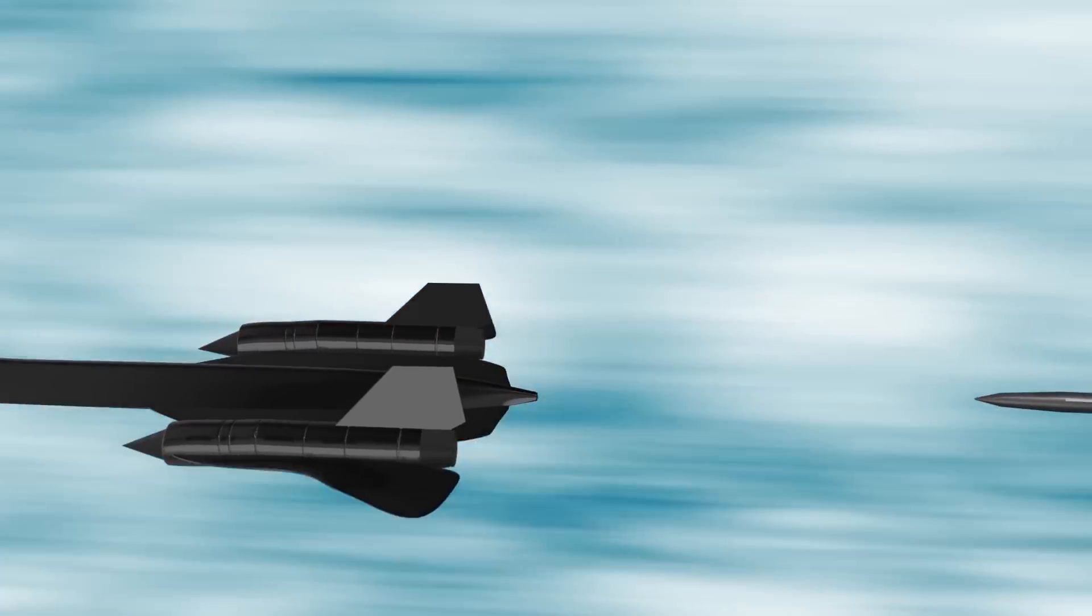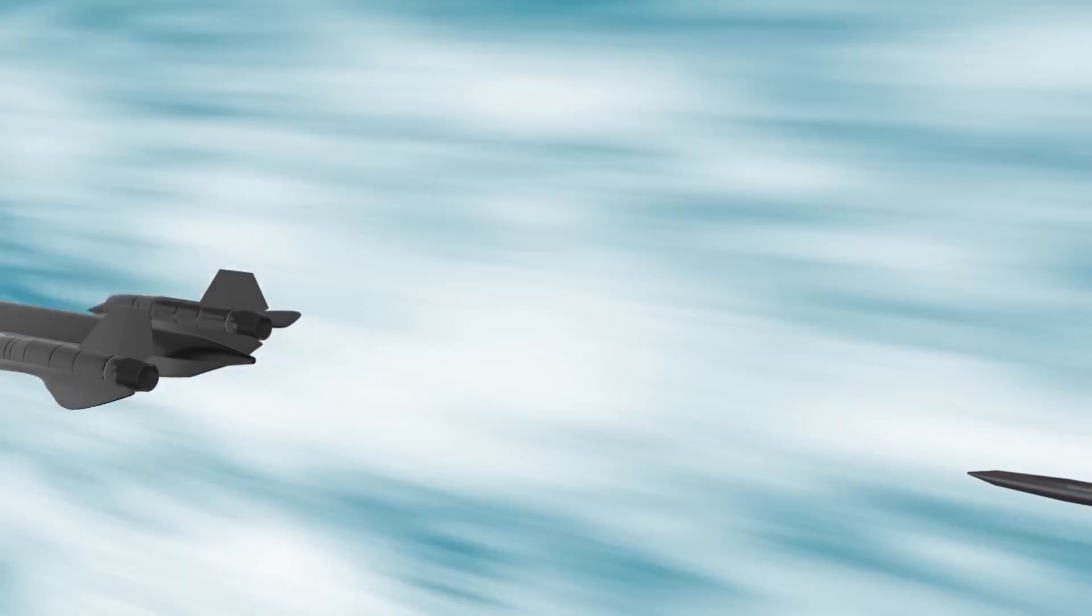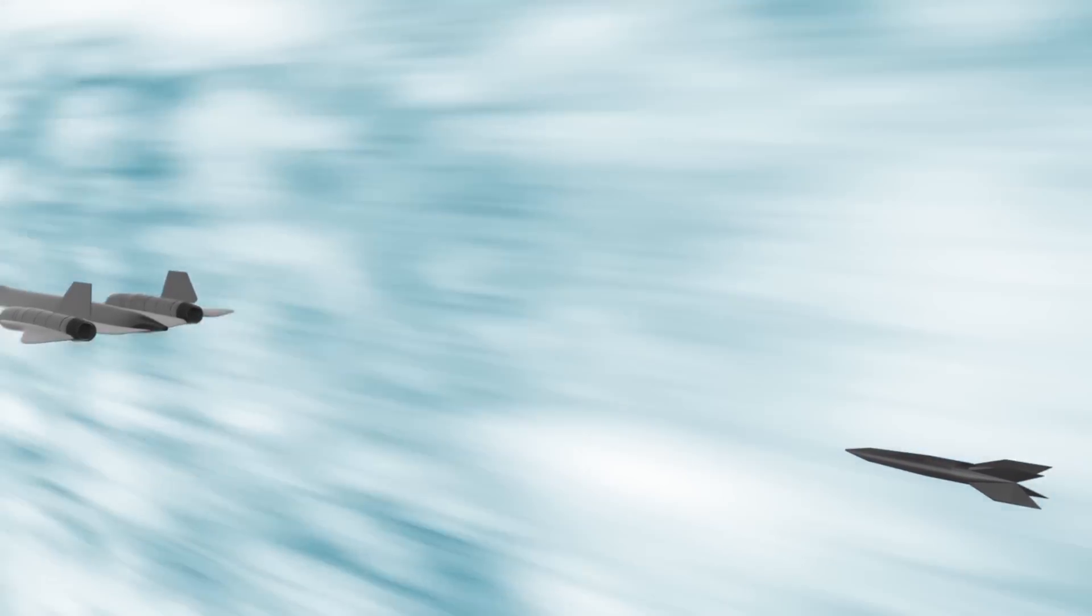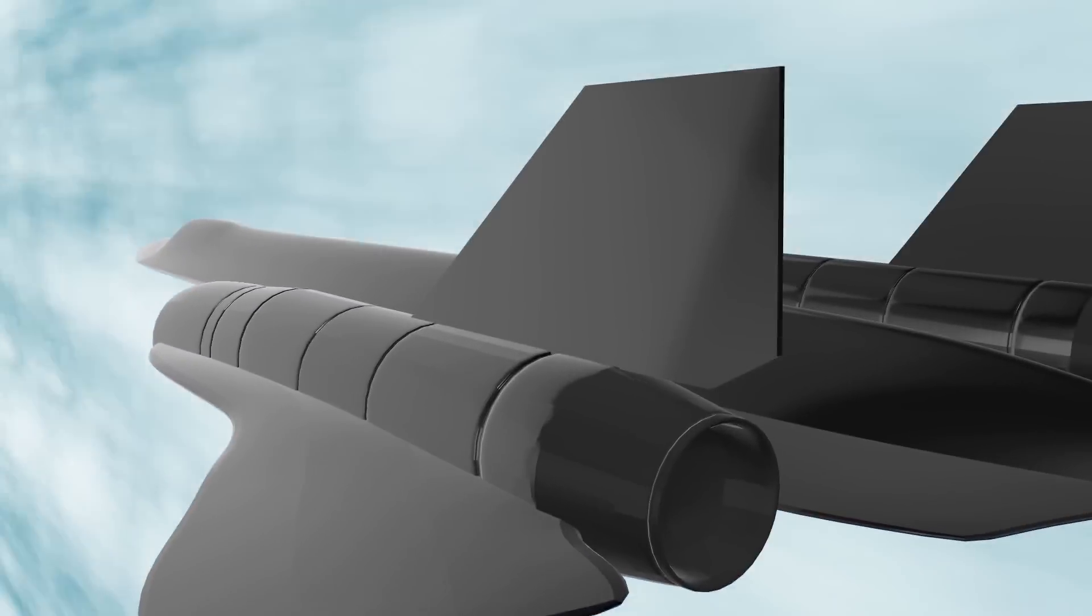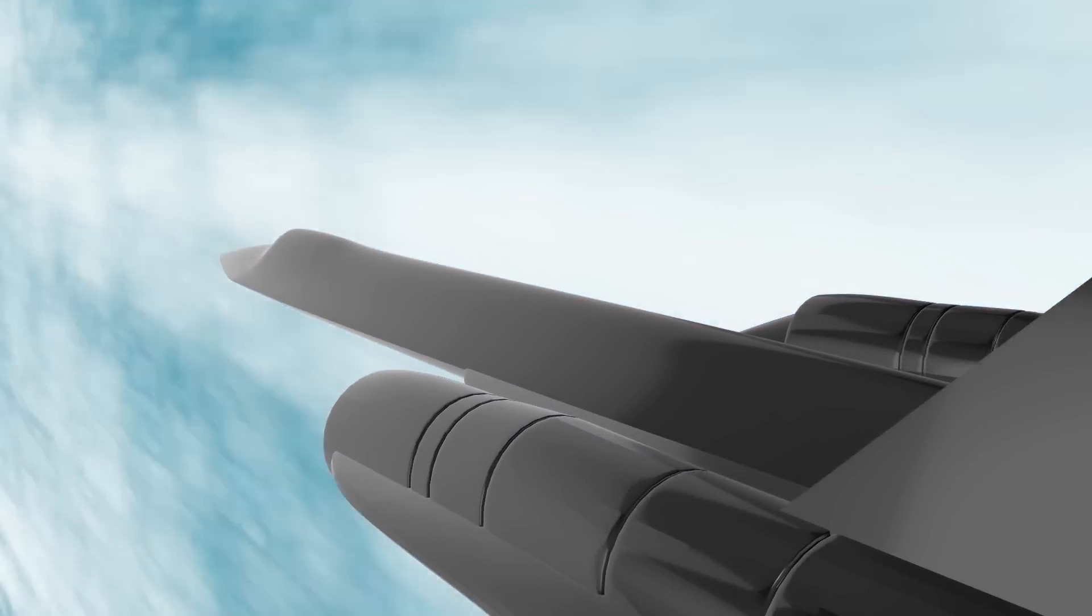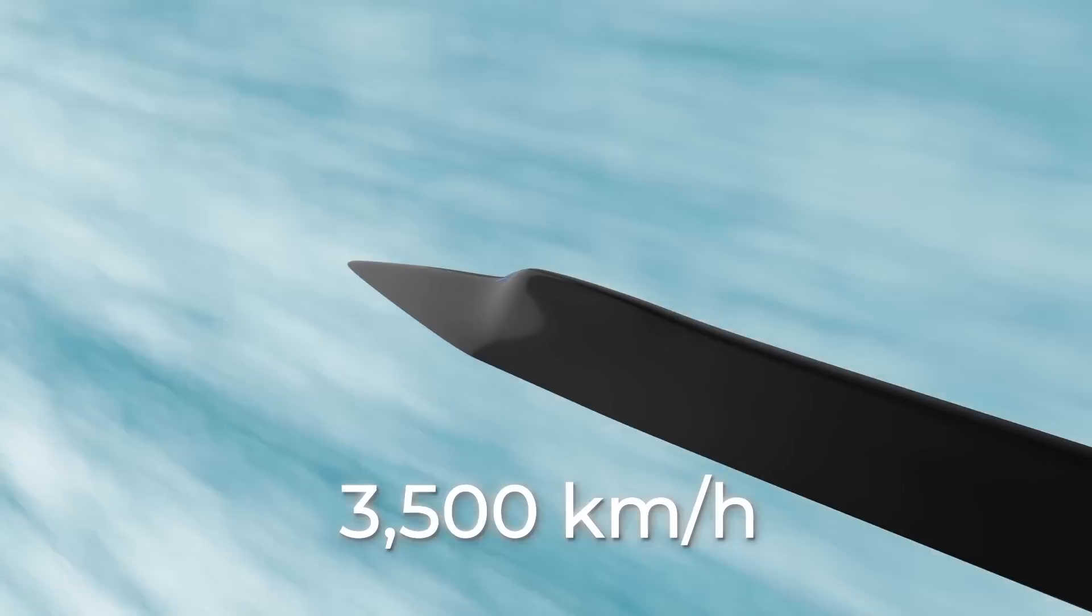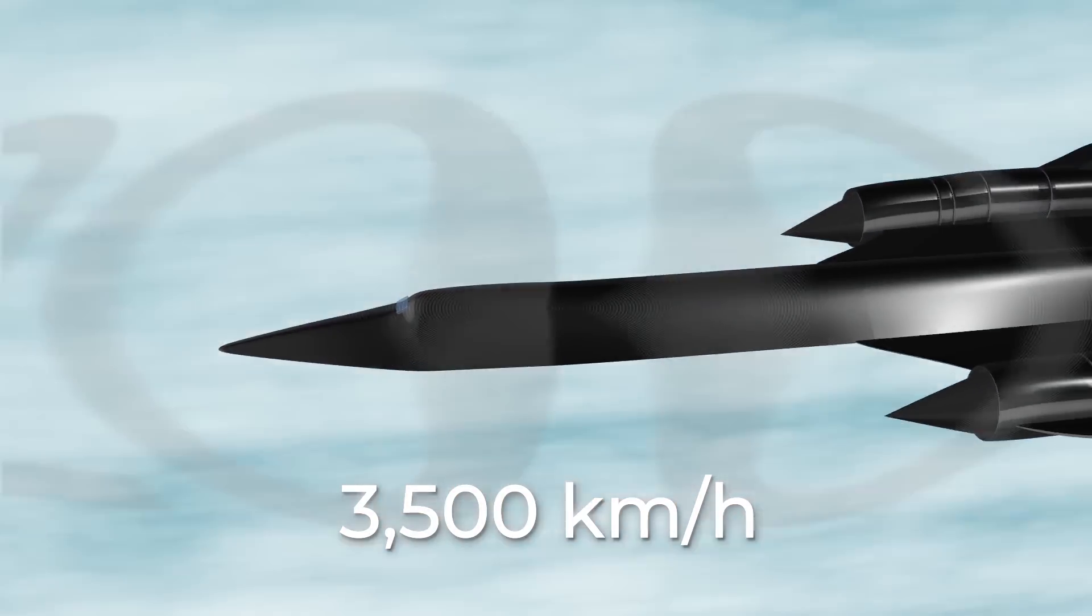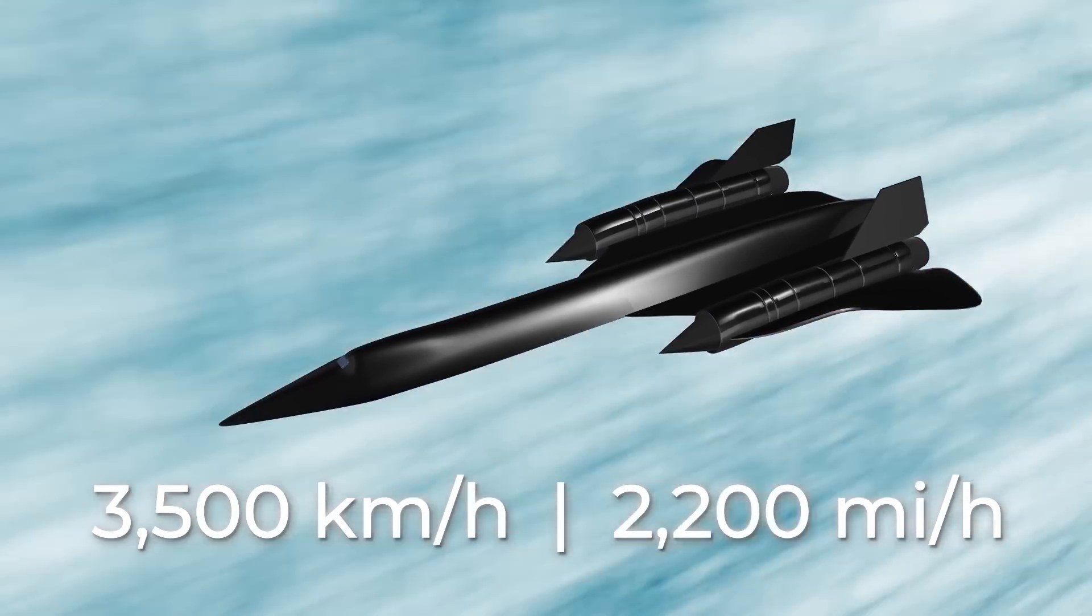If an enemy launched a surface-to-air missile, the Blackbird would simply accelerate and escape the collision. To achieve this effect, the plane was able to reach a speed of up to 3,500 kilometers per hour, or almost 2,200 miles per hour.